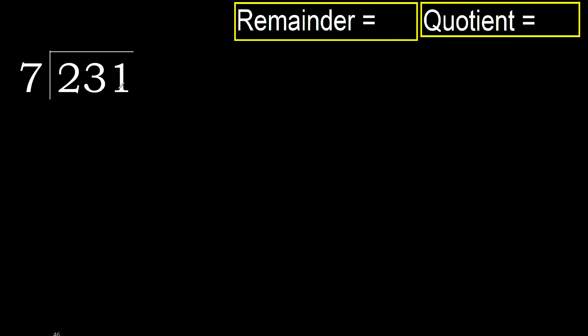231 divided by 7. 2 is less than 7, therefore move to the next digit. 23 is not less than 7, therefore we work with 23.